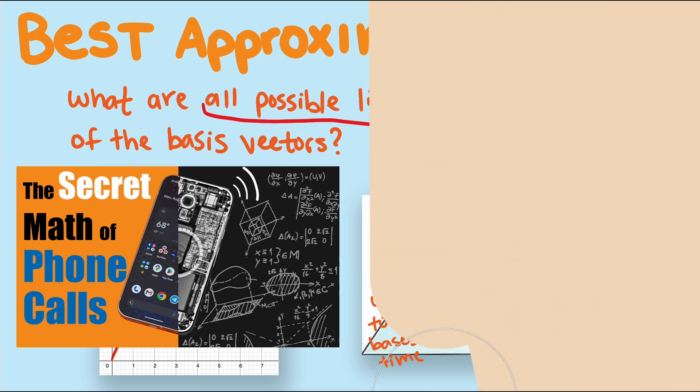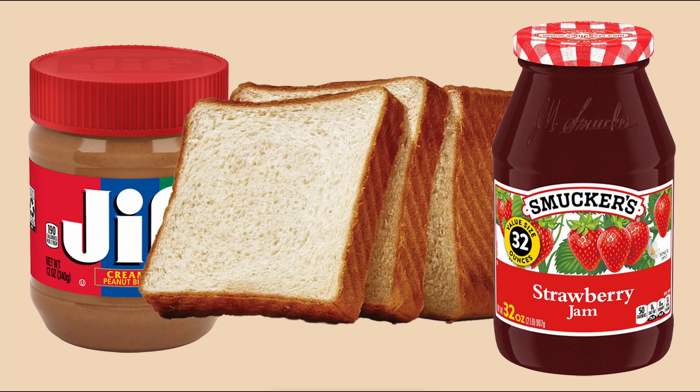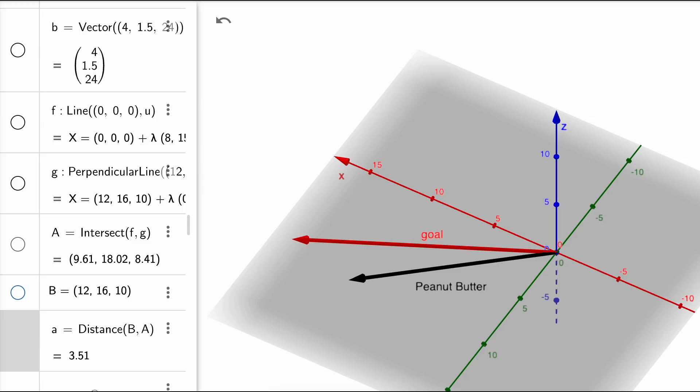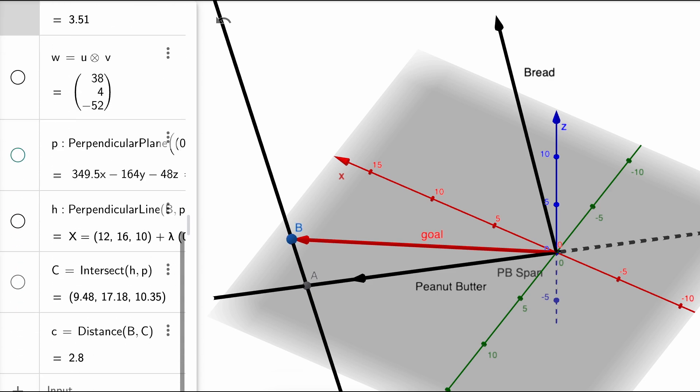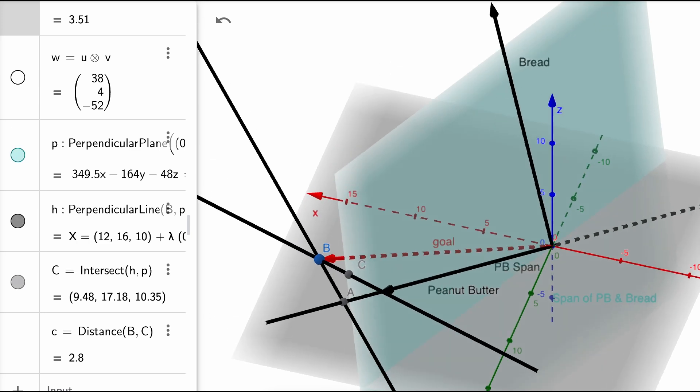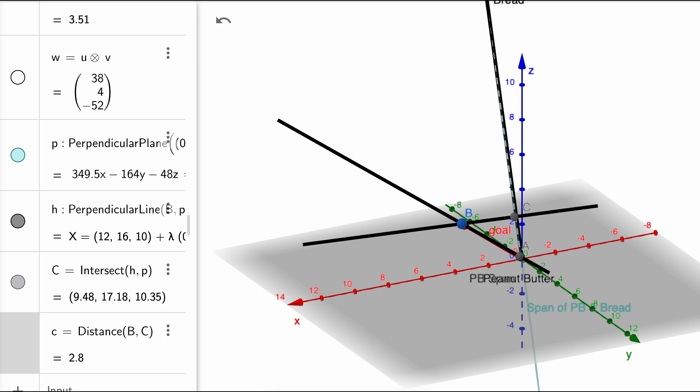Let's use the food example to make sense of what is going on. We've seen in previous videos that the more food basis vectors I add, the closer I tend to get to my goal vector. When projecting the goal vector onto the span of one food, in this case peanut butter, I get this. And when projecting the goal vector onto the span of two food vectors, peanut butter and bread, we can get this close to the goal vector, which is much closer.